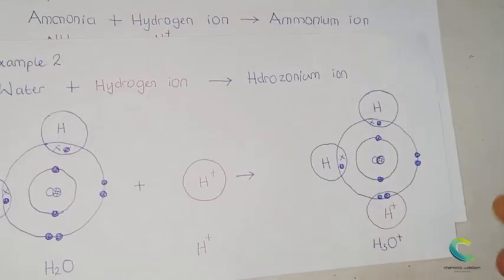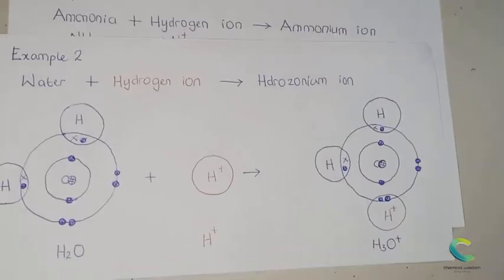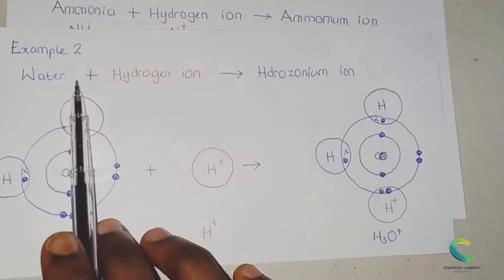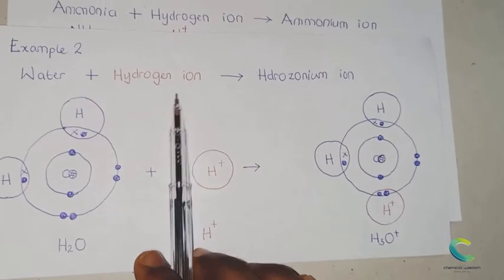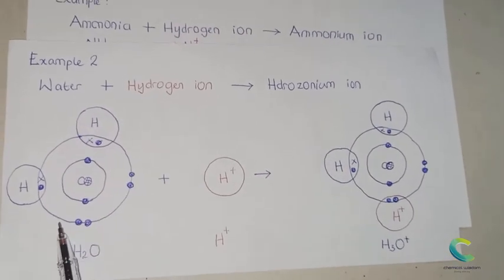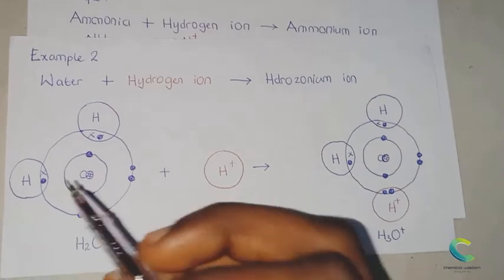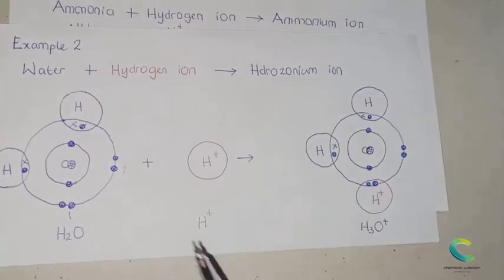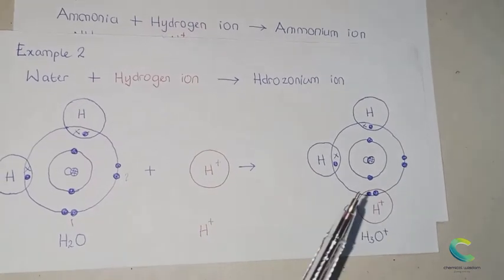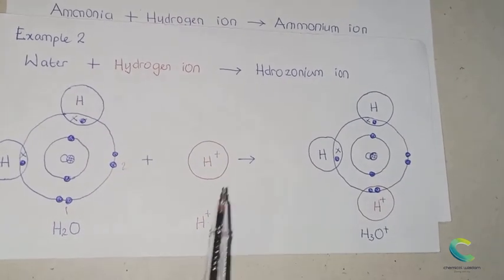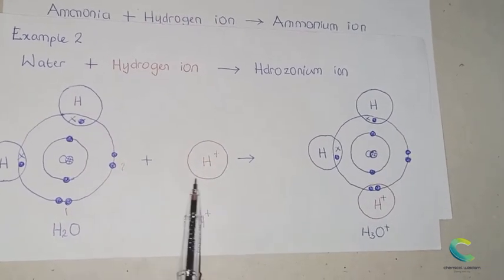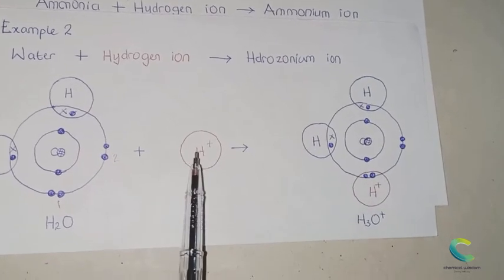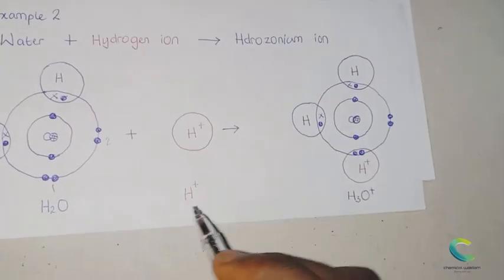Another typical example is the formation of hydronium ion between water and hydrogen ion. If you look at the structure of water, water has two lone pairs of electrons. This is the first lone pair and this is the second lone pair. Just like in the reaction between hydrogen ion and ammonia, this hydrogen needs two electrons to balance up the valence. So what does it do? It attaches itself to one of the lone pairs.